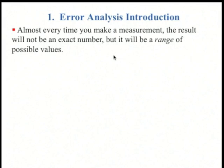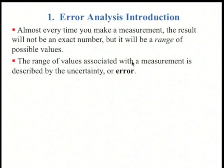Almost every time you make a measurement, the result will not be an exact number, but it will be a range of possible values. The range of values associated with the measurement is described by the uncertainty or the error.